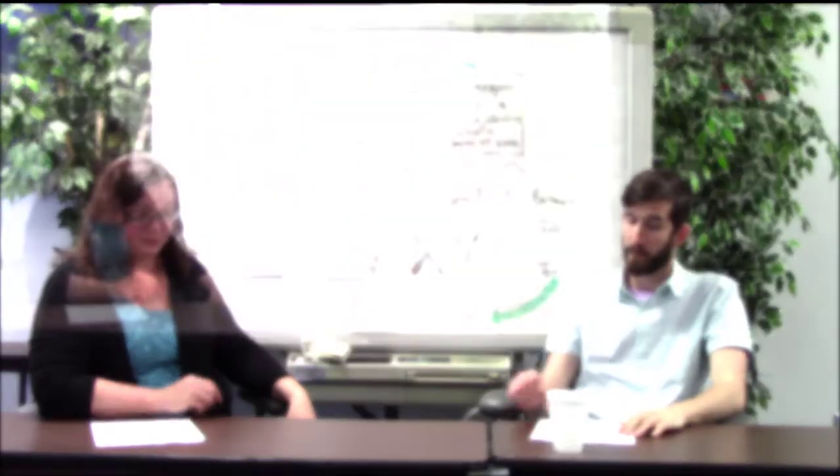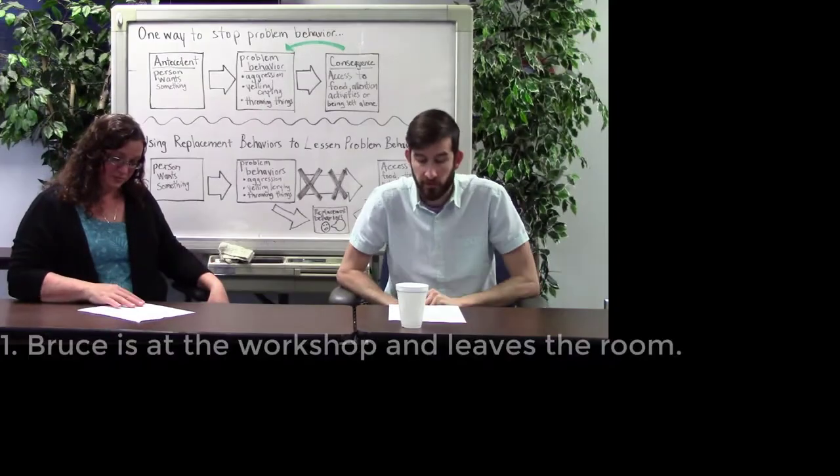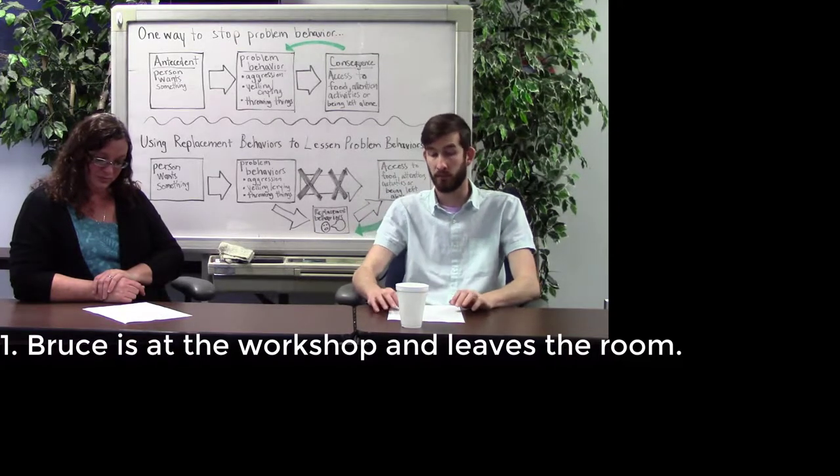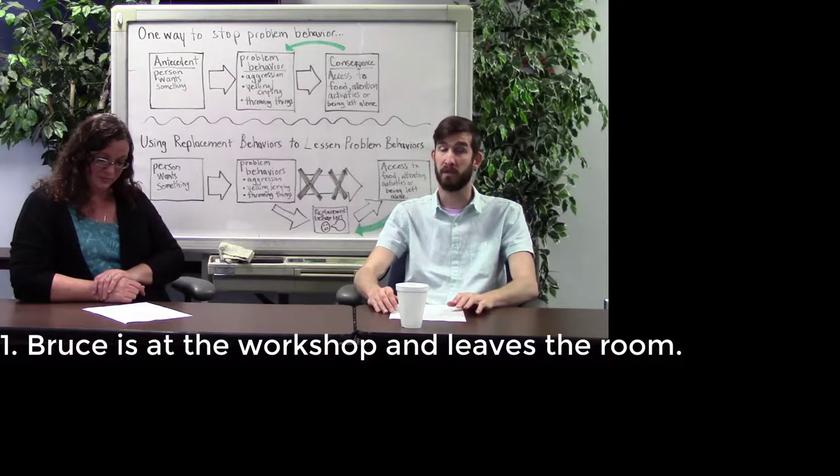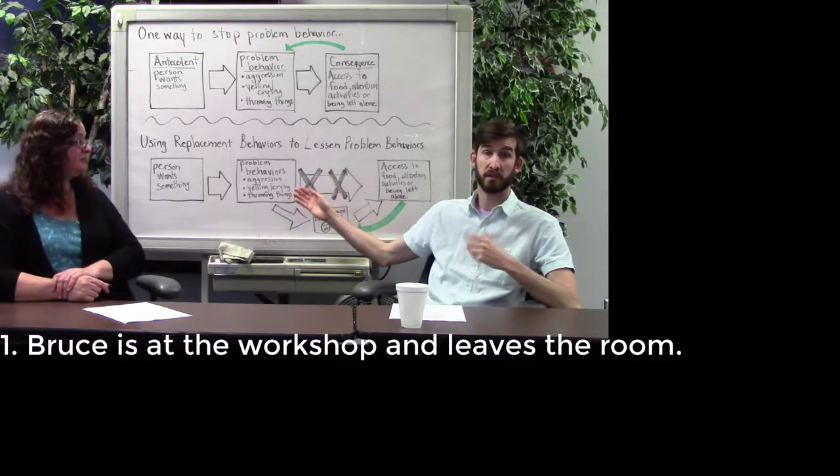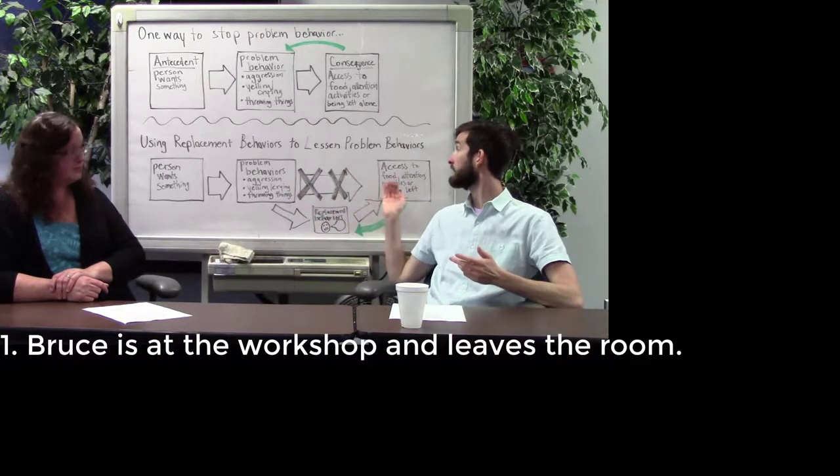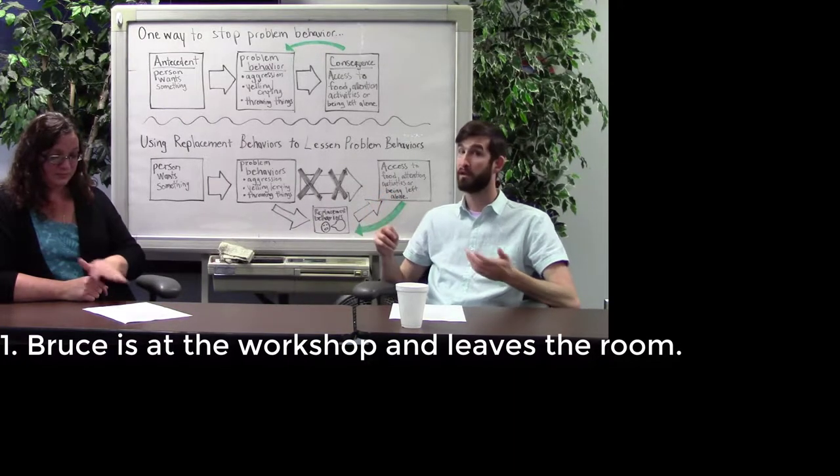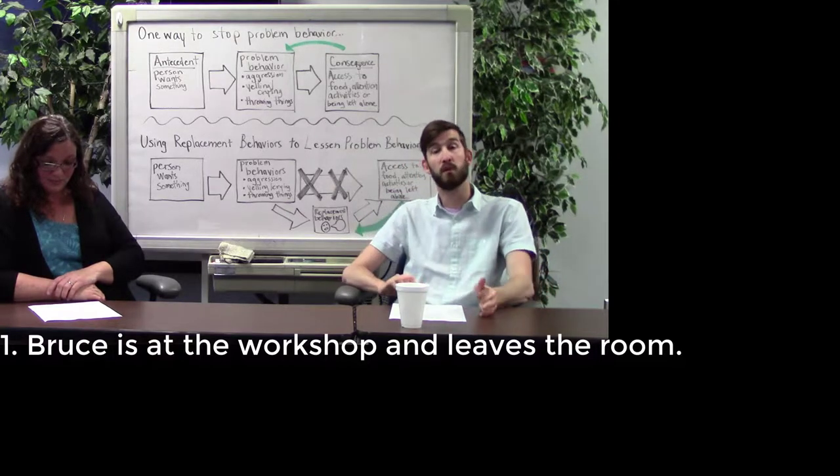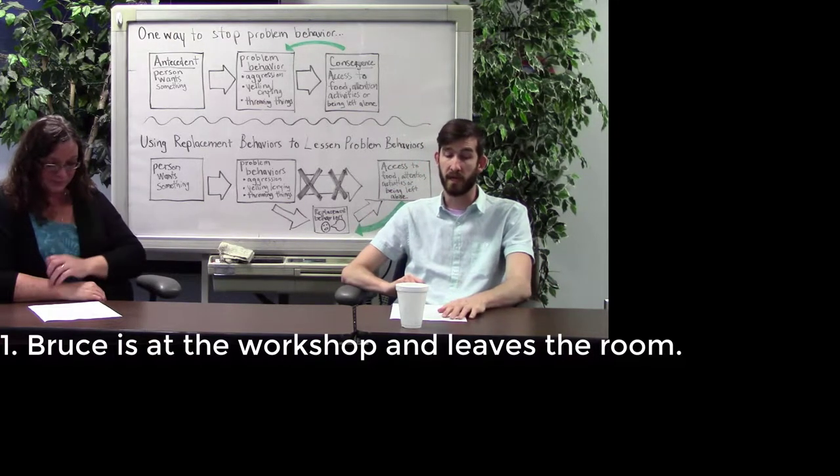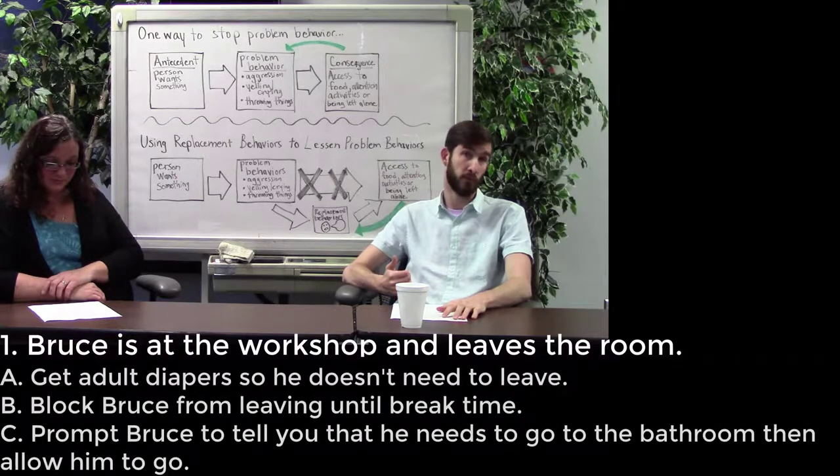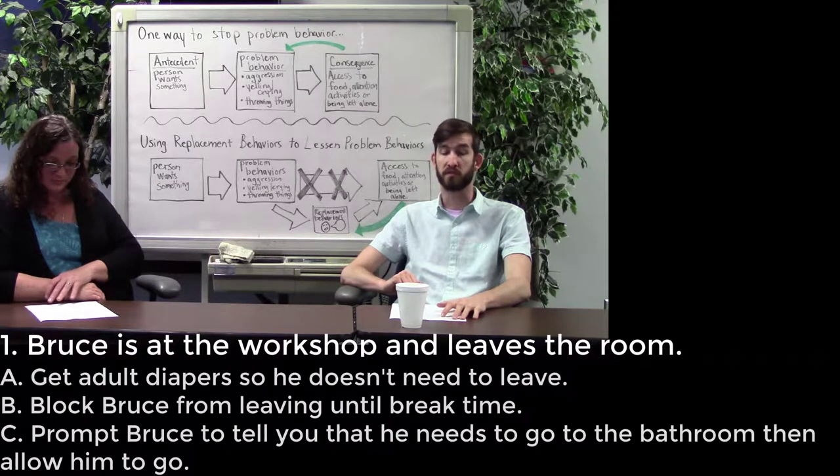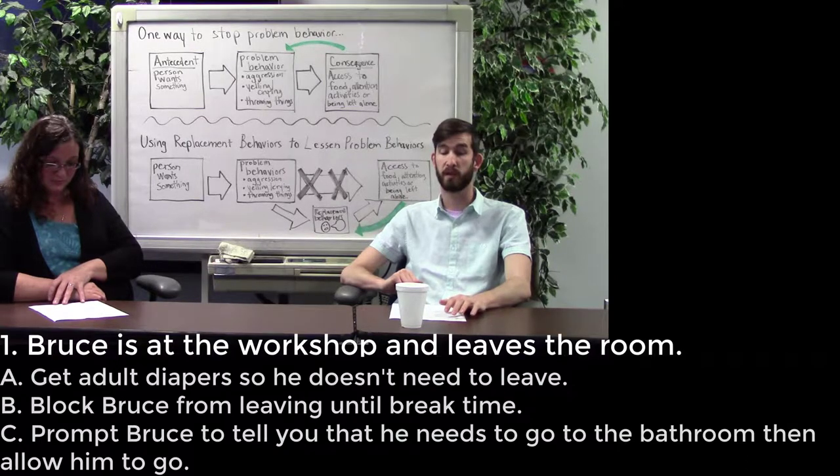I have two ASRs to do. The first is Bruce is at the workshop and leaves the room without saying anything due to years of being told no, he can't go right now. So we're going to look for the replacement behavior. Right now we know the problem behavior is just leaving the room. I'm not sure where he's going. And the consequence though is he gets to go to the bathroom. And that's a problem because we need to know where he's going at least. So tell me which one would be the best replacement behavior. Is it A, get Bruce adult diapers so he doesn't need to leave the room? Is it B, block Bruce from leaving and tell him to wait until break time? Or is it C, prompt Bruce to tell you he's going to the bathroom and allow him to go?